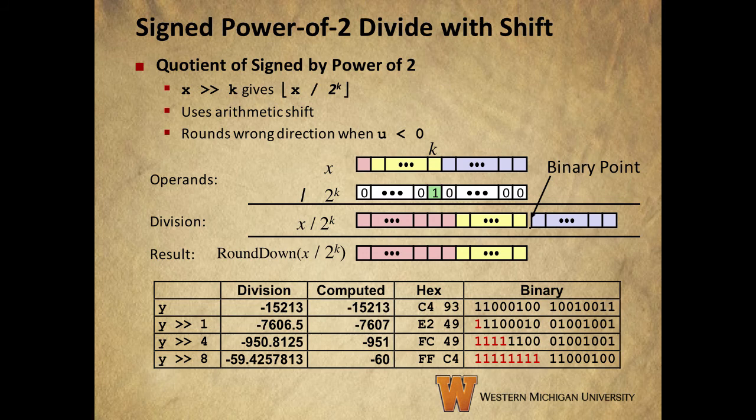A signed power of 2 divide with shift gets a little more complicated. It works mostly the same as with unsigned, but we use an arithmetic shift in order to preserve the sign of the integer. It also rounds in the wrong direction when x is less than 0. We want our results to round towards 0, but as you can see from the table, they actually round down, or away from 0 in every case when our integer x is negative.